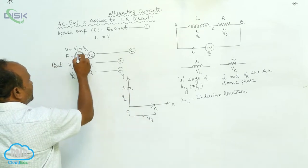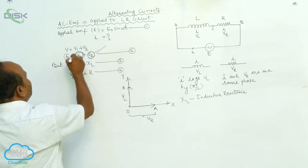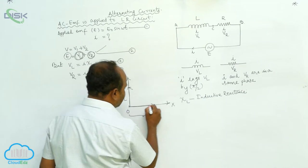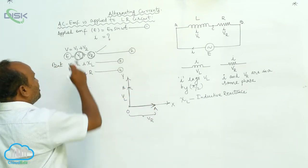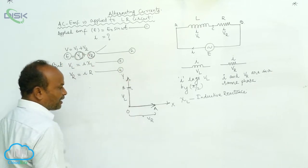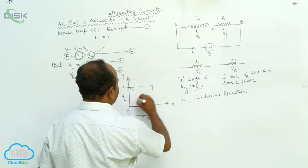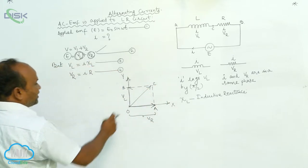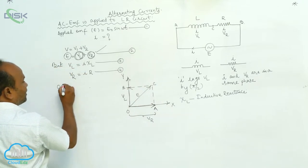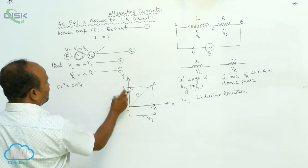Now E is equal to VL plus VR. From the vector diagram, I can calculate the resultant EMF. The voltage VR is along the x-axis and the voltage along the inductor is taken on the y-axis. The resultant is OC. From the vector diagram, this is called E. Therefore, OC square equals OA square plus OB square.